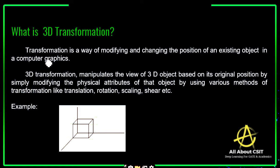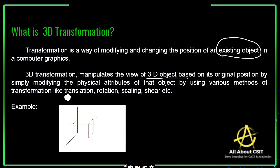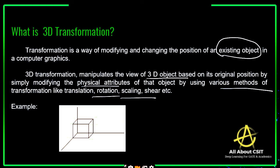Transformation is nothing but changing the object's position, object size, or object shape. It is modifying and changing the position of an existing object. We apply transformation techniques — scaling, translation, rotation, shearing, reflection — only on existing objects. 3D transformation manipulates the view of a 3D object based on its original position by modifying the physical attributes, meaning the present coordinates of an object, using various methods like translation, rotation, scaling, shearing, and reflection.